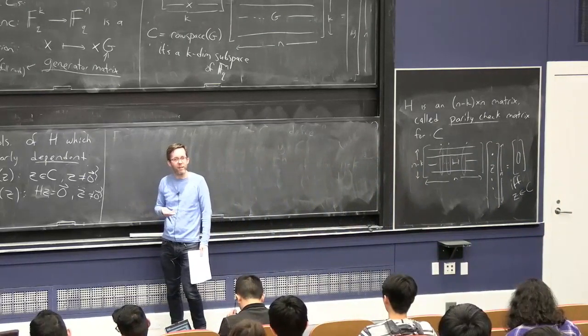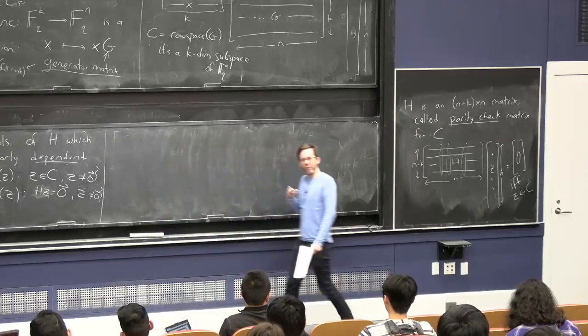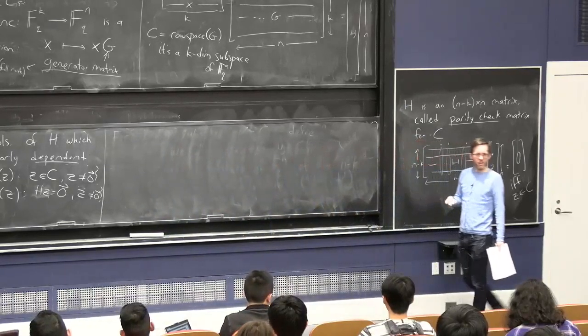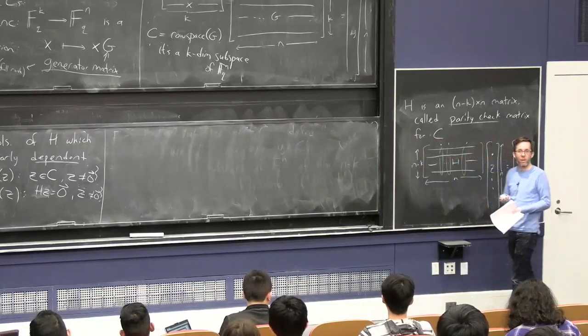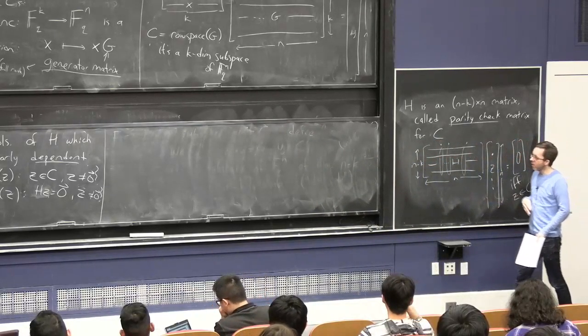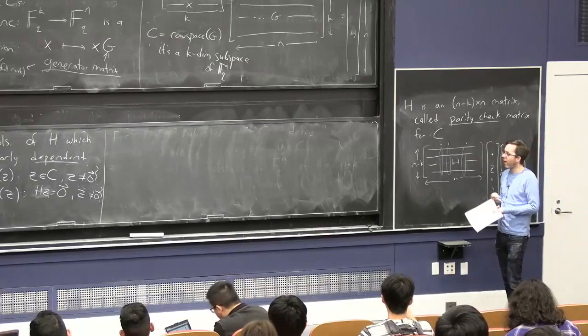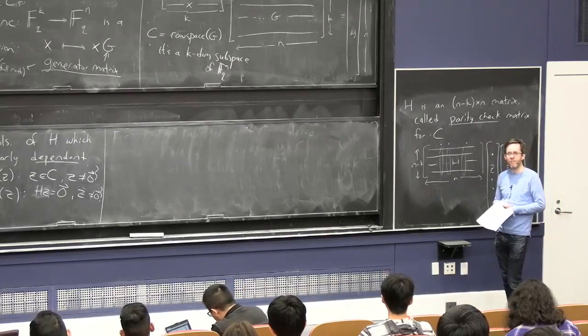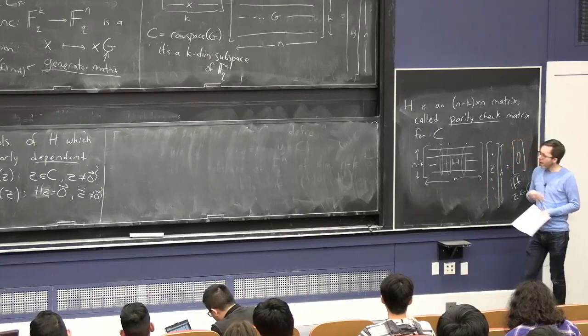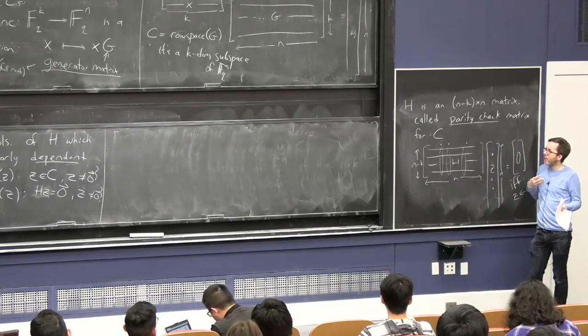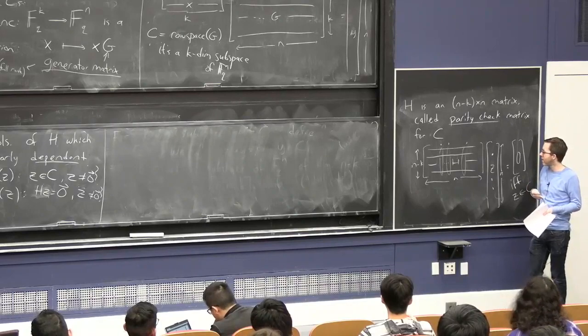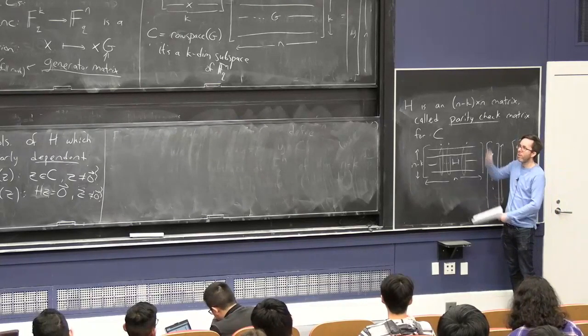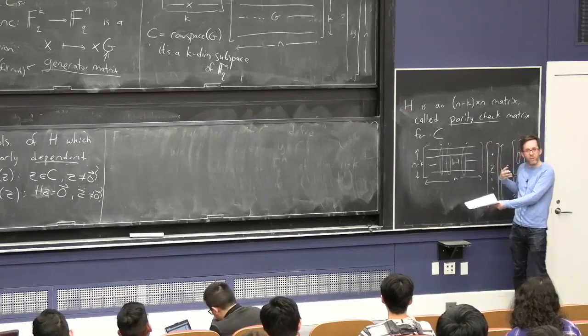So we'll have a code of minimum distance at least 3, which is sort of like the first minimum distance that's good for something, because as we saw before when we were fixing this thing about the distance, in this case, you'll be able to decode from one corruption. And if we want a code that has lots of code words in it, that has a very high rate, do we want H to be like a tall and thin matrix or a fat and wide matrix?